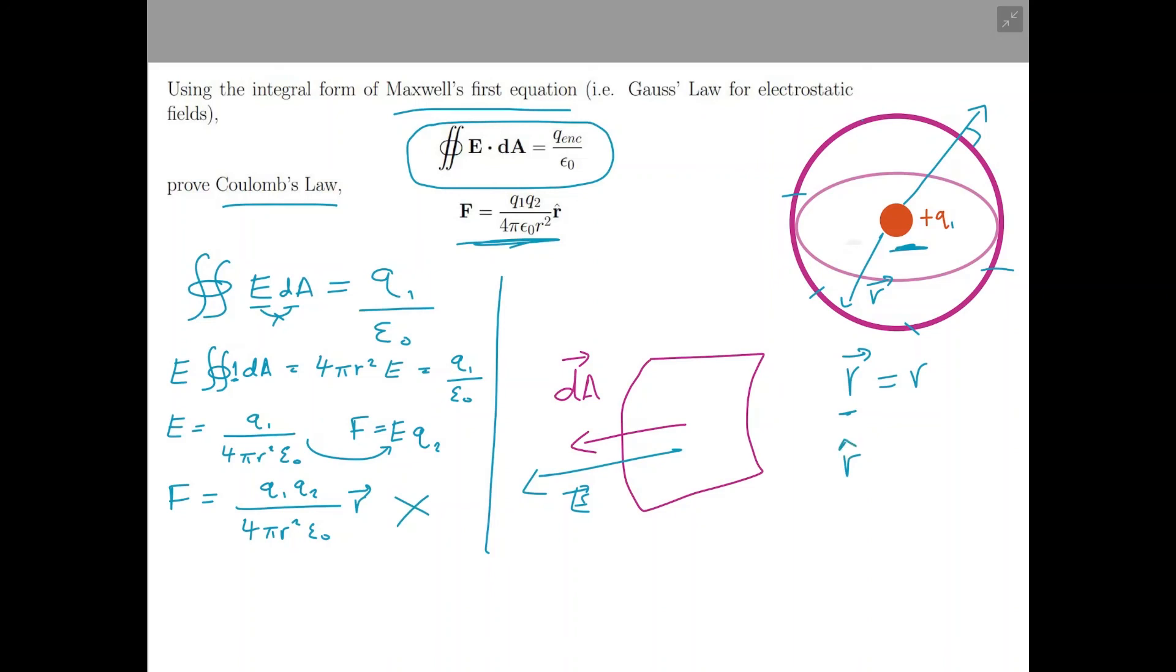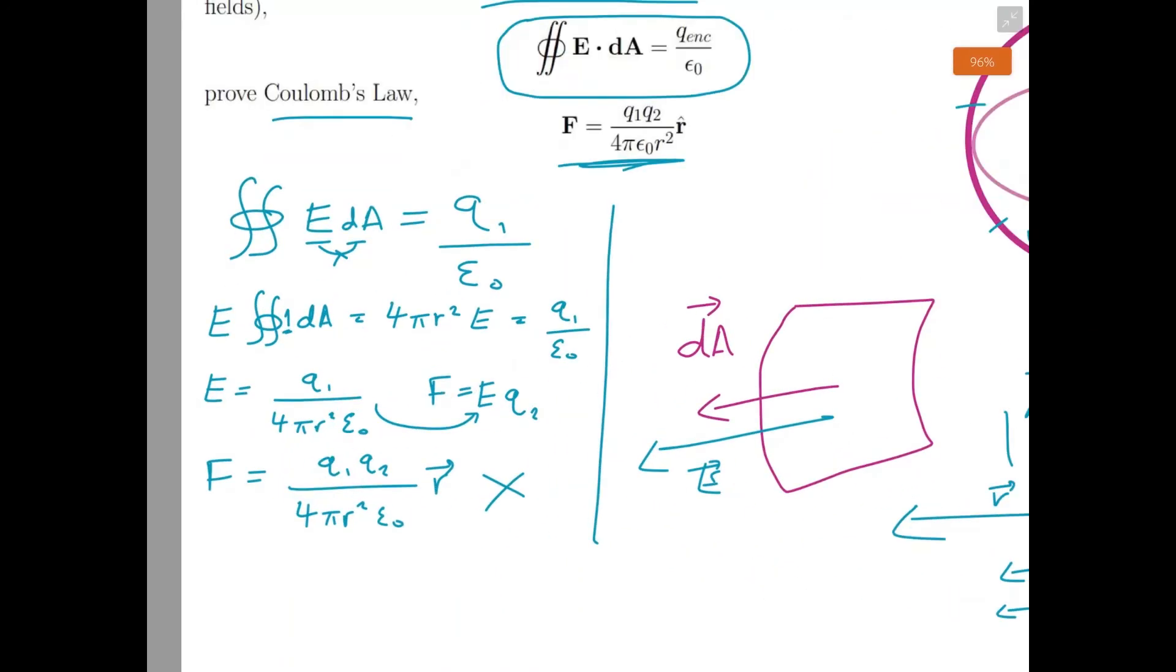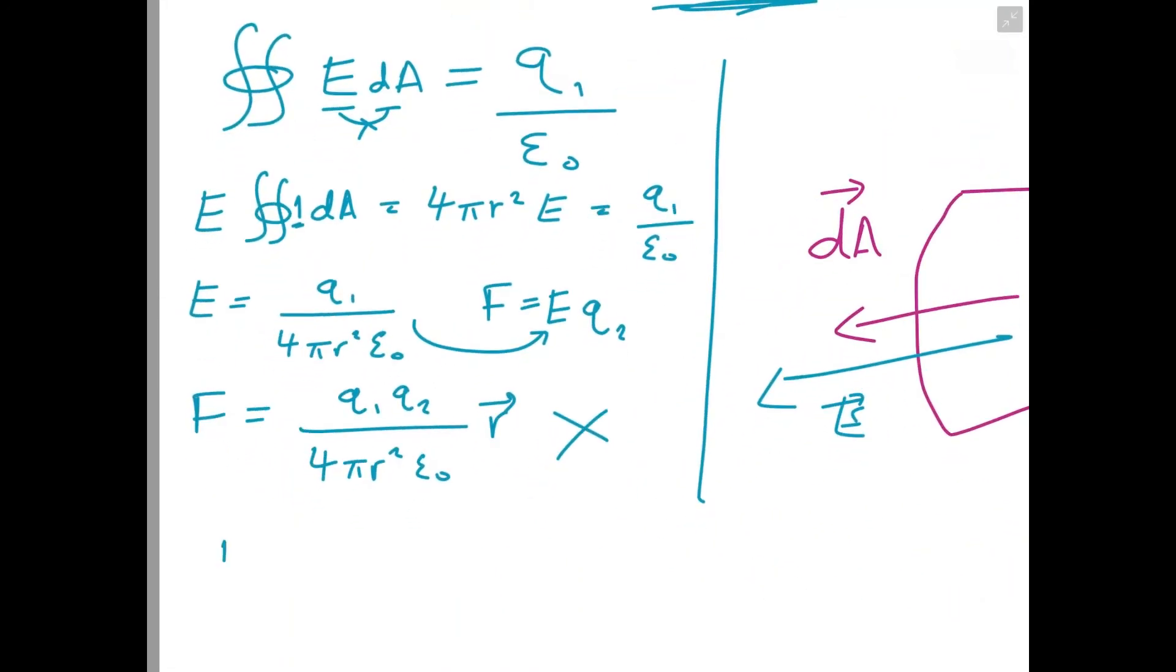r̂ is a unit vector with the same direction as r but just with a length of one. So if this is our vector r, r̂ would look like this and we just have a length of one. So instead of putting r in, we can get a vector equation for F.